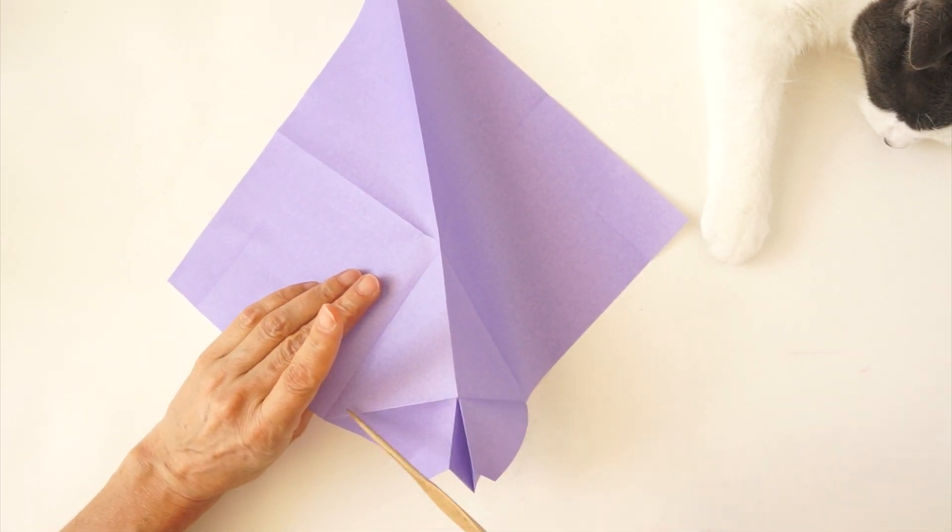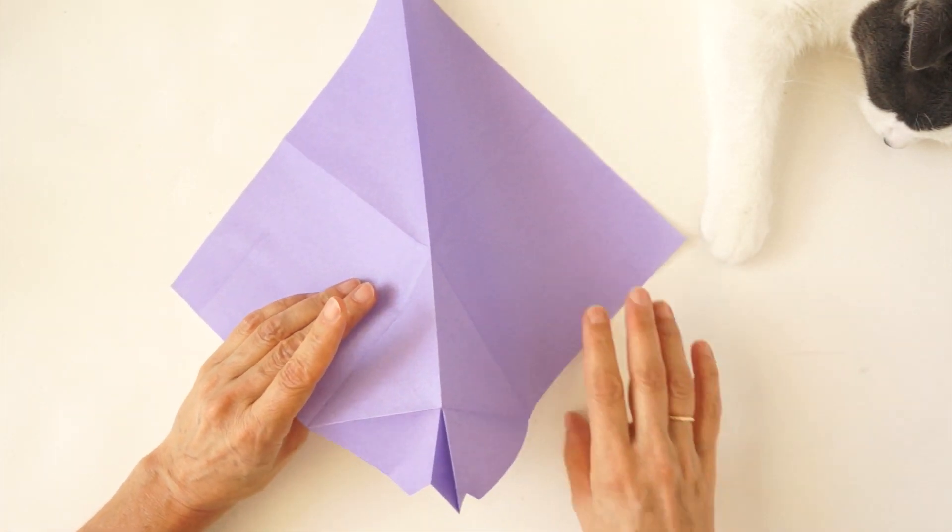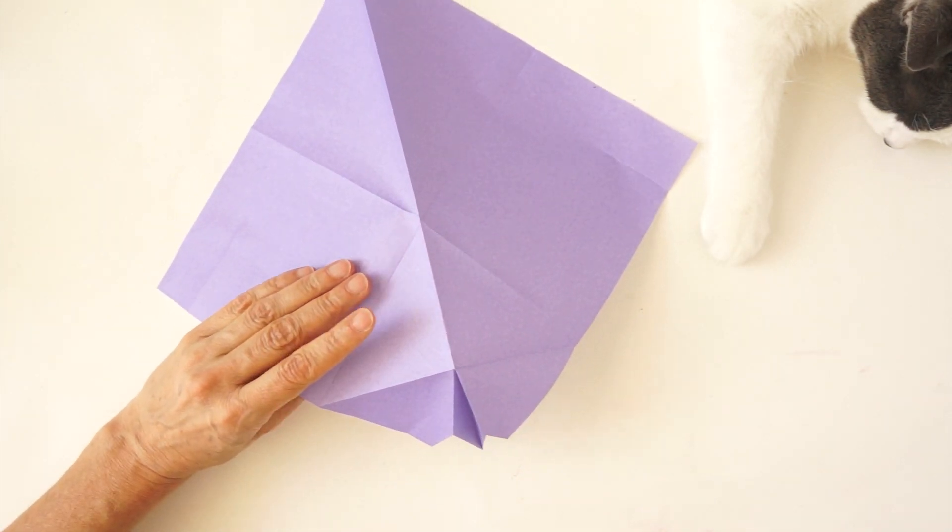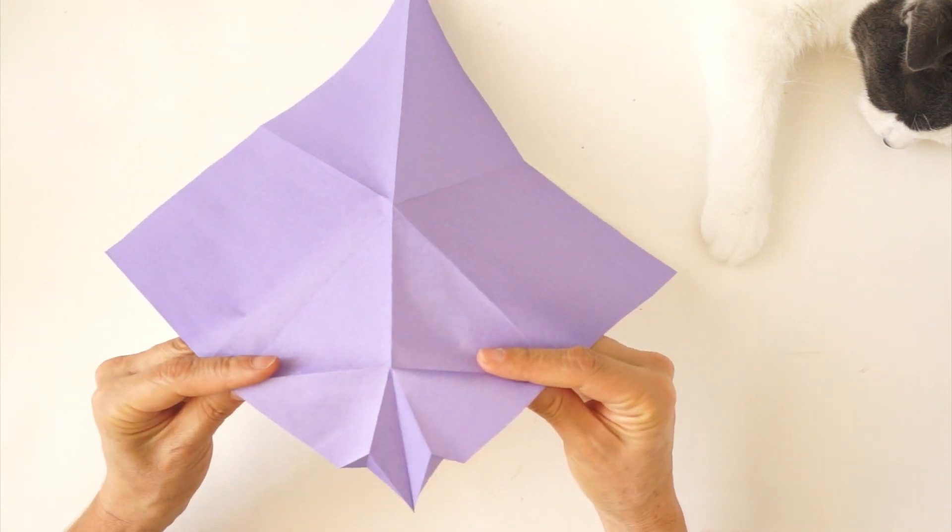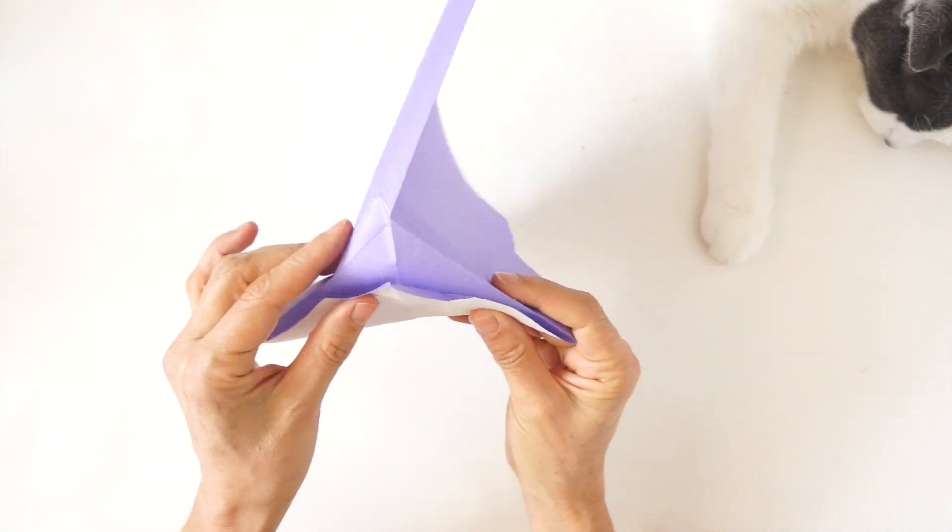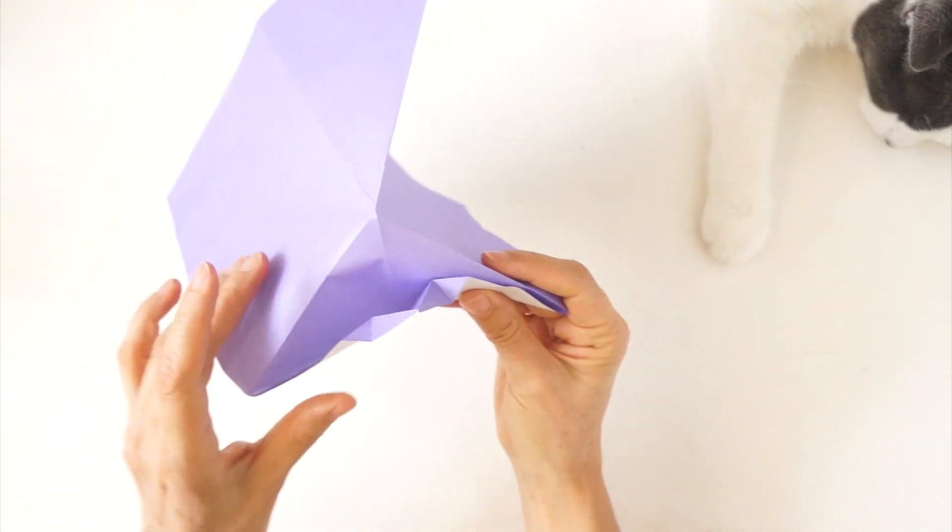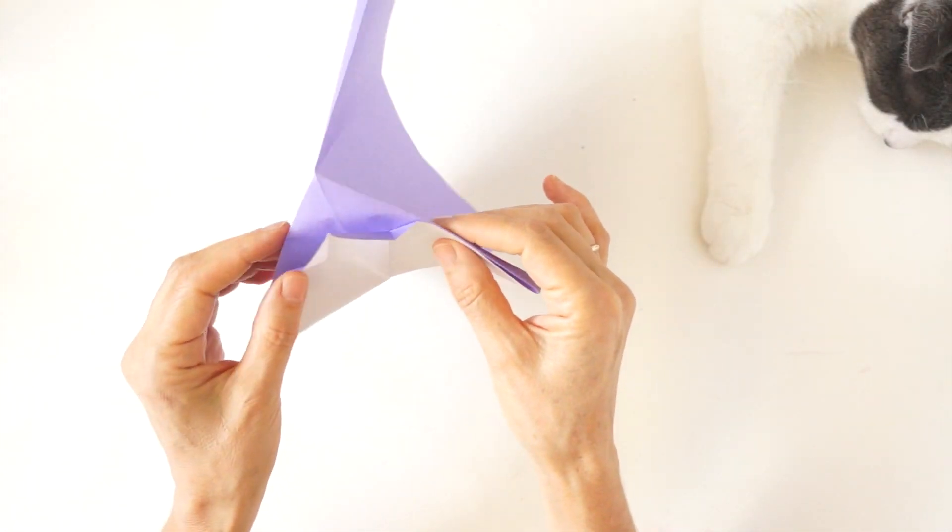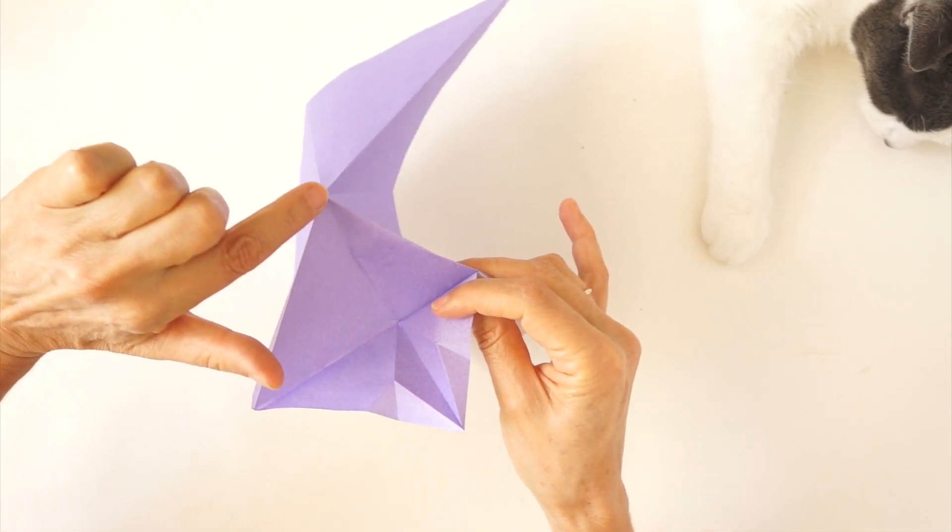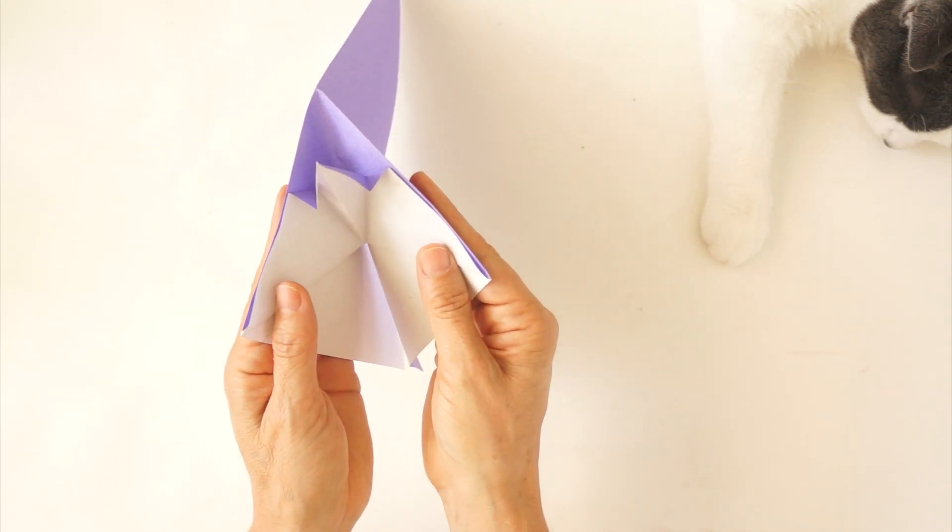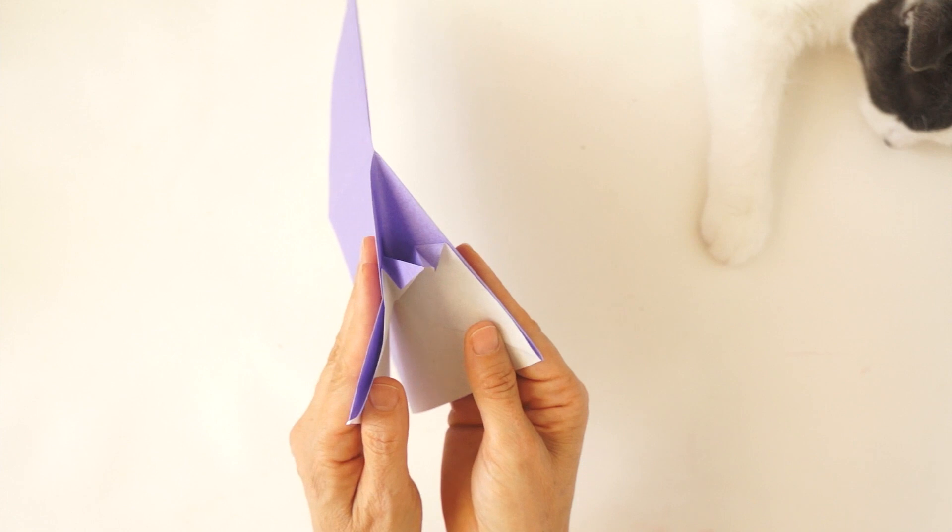This fold and this fold will be mountain folds. This fold will be a valley fold. So we reinforce it as a valley fold. Carefully, we reinforce this and this as mountain. This is valley fold. And close it so that it collapses to the way we had it before.